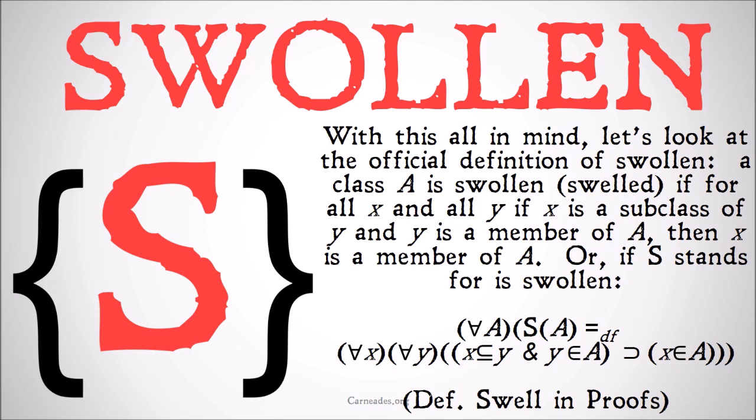With all that in mind, let's look at the official definition. A class A is swelled if for all X and all Y, if X is a subclass of Y and Y is a member of A, then X is a member of A. In definition form: A is swelled if and only if for all X and all Y, X is a subclass of Y and Y is a member of A implies X is a member of A. You'll notice this is very similar to transitivity with just a couple small changes of membership to subclass. This will be 'definition swell' in proofs.